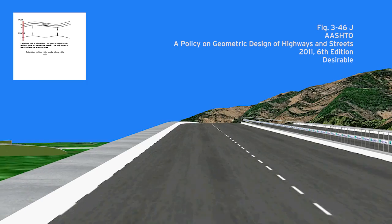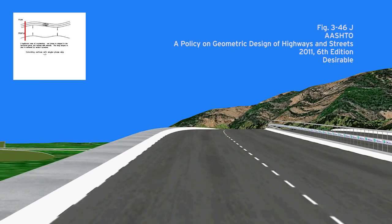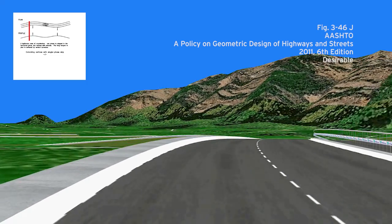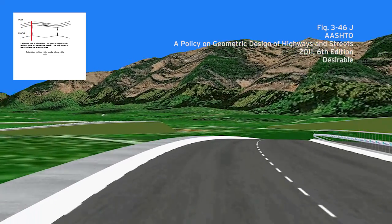Figure J softens a long tangent between horizontal curves with a vertical curve.